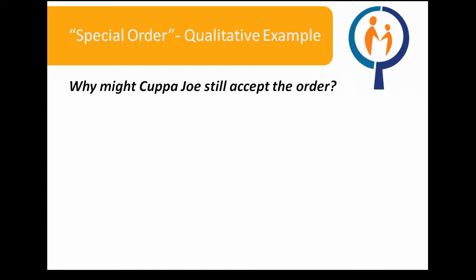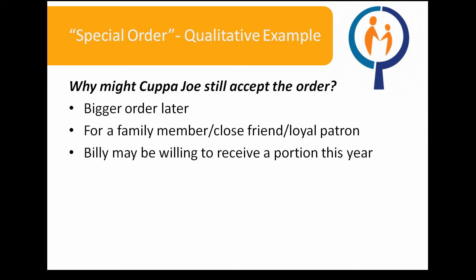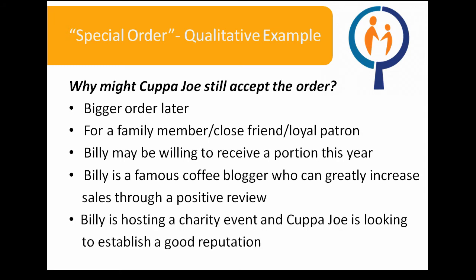Quantitatively, it appears as if Cup of Joe should reject the order. But are there qualitative reasons why they may still choose to accept it? Absolutely! Before saying yes or no to a decision, we should always think qualitatively. For example, Cup of Joe may still accept the order if it leads to a bigger order down the road, if it's for a family member, close friend, or loyal patron, if Billy is willing to receive 5,000 bags this year and 5,000 bags next year, if Billy is a famous coffee blogger who will greatly increase sales through a positive review, or if Billy is hosting a charity event and Cup of Joe is looking to establish good public relations with the community.